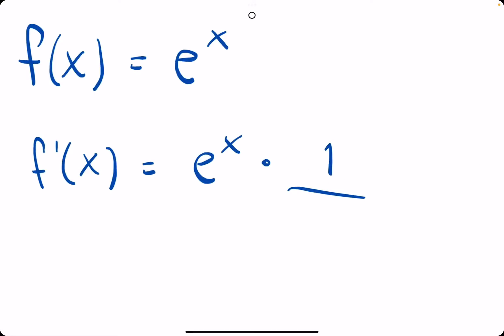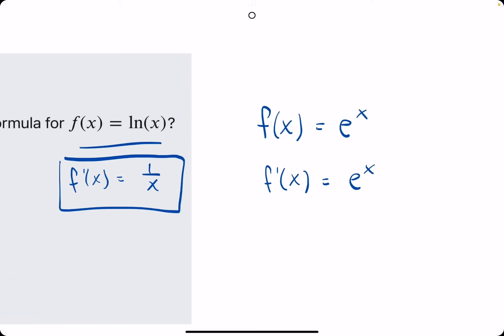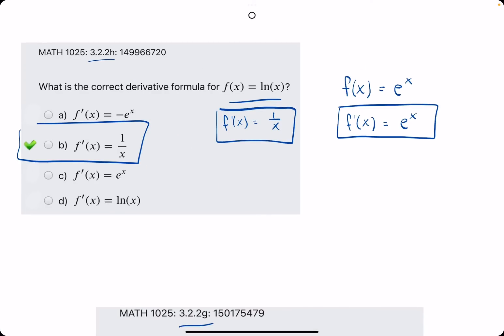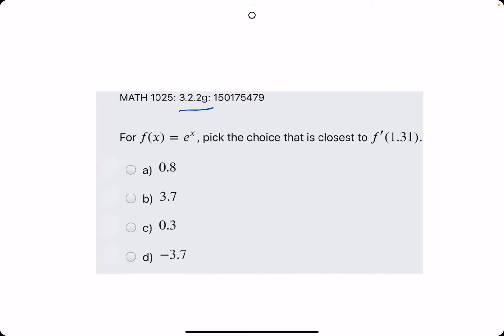And so really, this is e to the x times 1. In other words, just e to the x. So that's why it's kind of nice just to have this memorized, because the derivative of e to the x is itself e to the x. So with that in mind, moving on to this one.